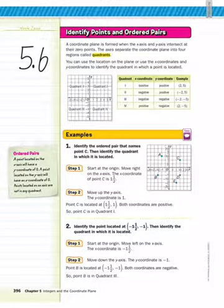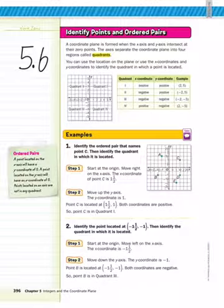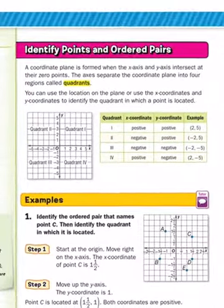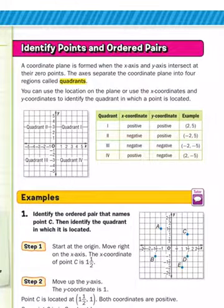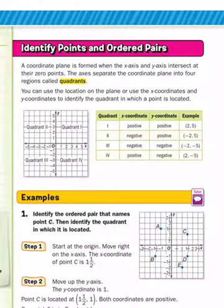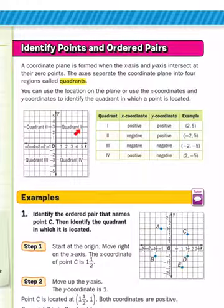Hey guys, this is the video lesson for Lesson 5.6 on the Coordinate Plane. Let's start out at the top. We're going to read about quadrants. Quadrants are just the four sections that make up the coordinate plane. This whole thing is the coordinate plane, and notice when we name quadrants, we name them with Roman numerals.